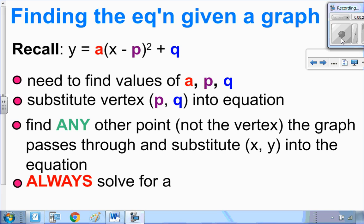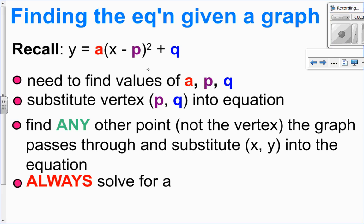So the first thing that you're going to do is look at the vertex, which is P and Q, and you're going to substitute it straight into the equation. So remember when you put in P and Q, you have to follow the format of the equation. So for example, if P was a negative 2, when I put it in here, taking away a negative 2 is a positive 2. So it will change. So pay special attention when you're dealing with P.